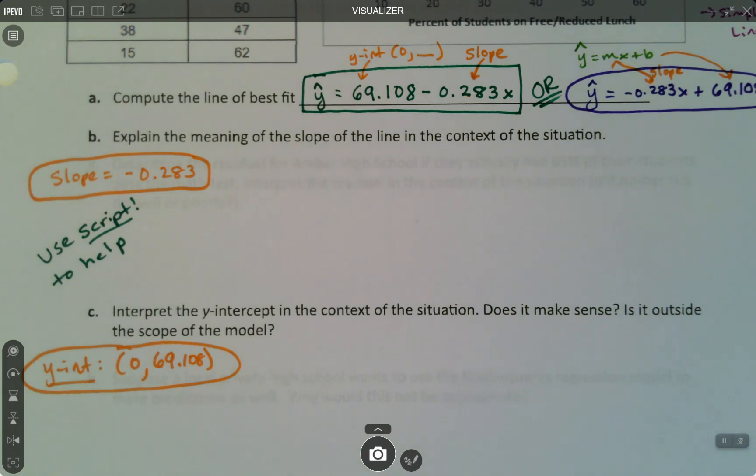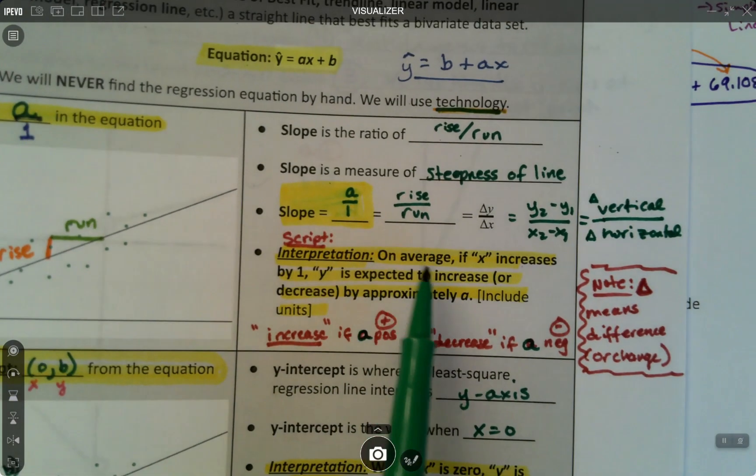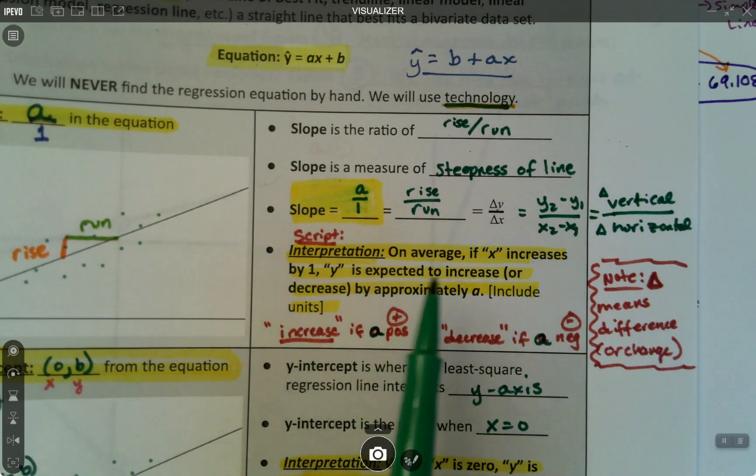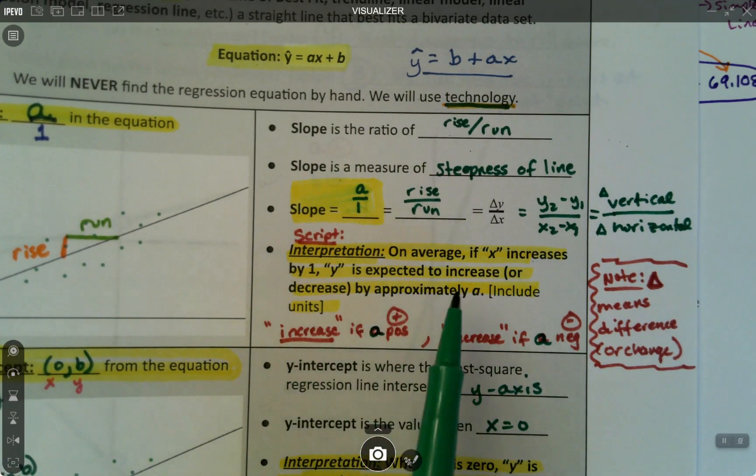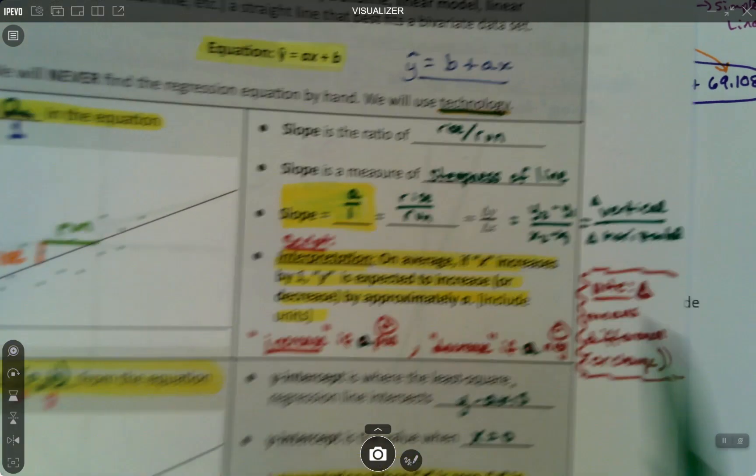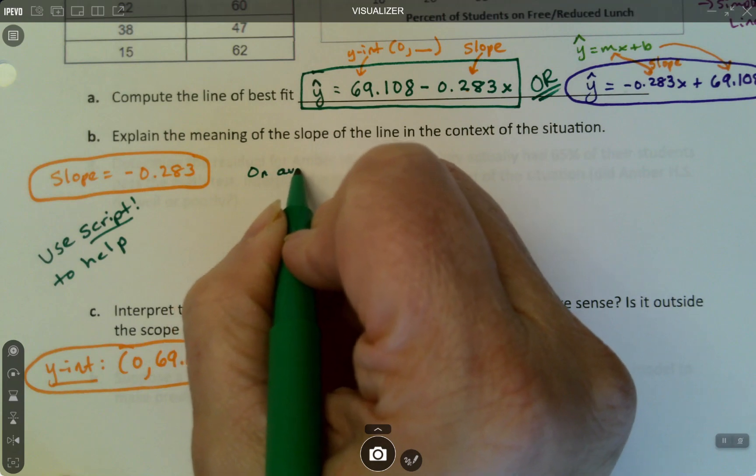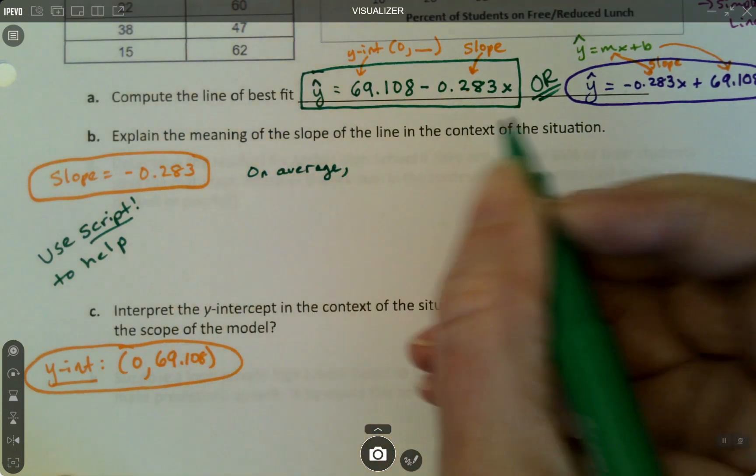The script is kind of the guardrails, the path that we want to follow for explaining this, but it's not going to be a perfect fit. Okay, so if we go back to the script, it says, more or less, on average if X increases by one unit, then the Y is expected to increase or decrease by approximately A. Okay, for sure. All right, so I'll start off. On average, if...